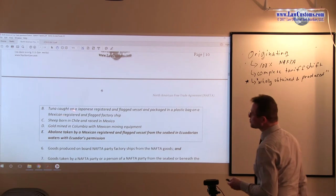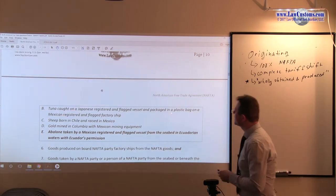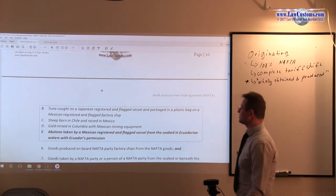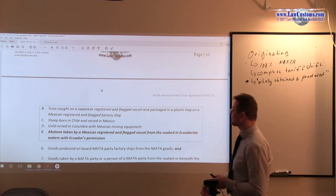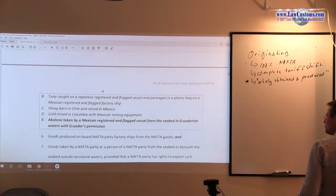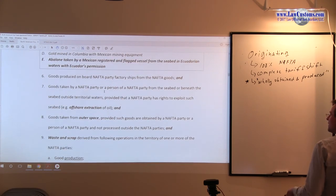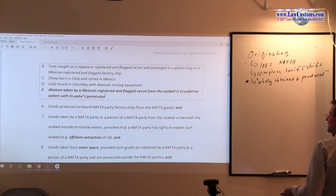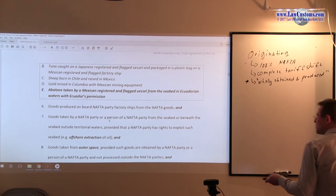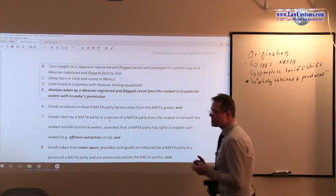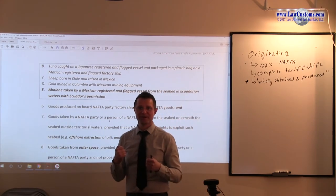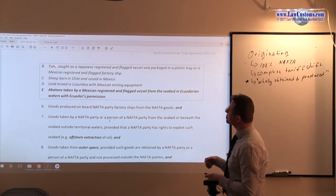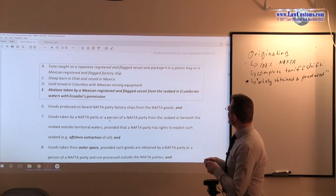We also have tuna, which is caught on a Japanese registered flag vessel and packaged in a plastic bag on a Mexican registered vessel and flag factory ship. The goal of the factory ship is you have to have substantial transformation taking place before you can qualify. Here, all that is being done to the tuna is the packaging. Nothing else. No processing. There is no making of filet. You just merely package the product.